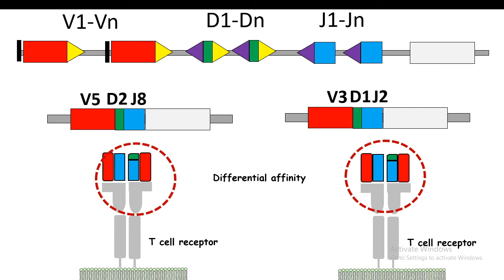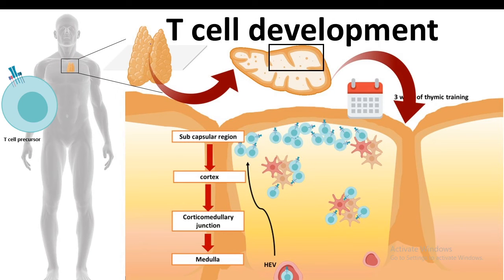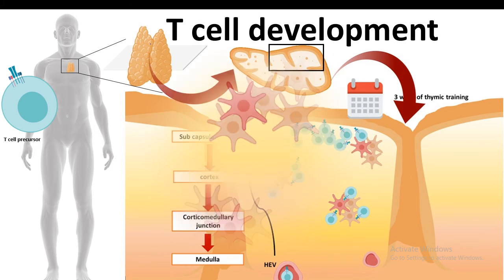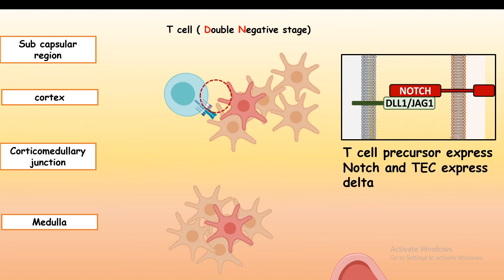The question is where does the VDJ recombination take place, or where does the TCR rearrangement take place? It turns out that T cell development takes place in the thymus. Inside the thymus, definitely the rearrangement is taking place. T cells first of all commit to their lineage in the cortical region, and Notch signaling turns out to be important for this phenomenon.